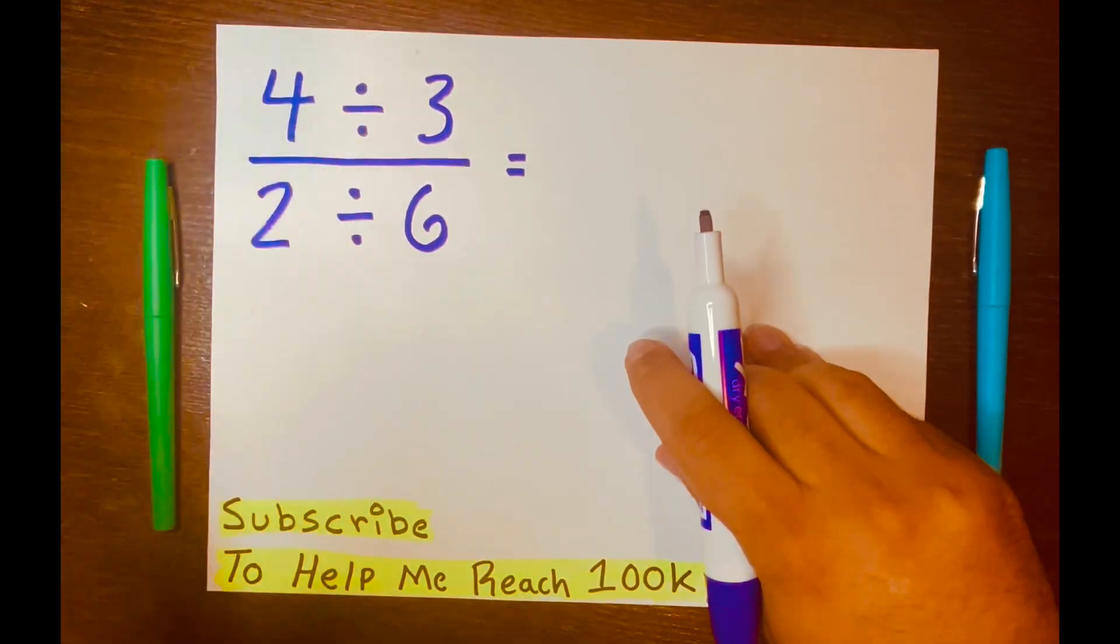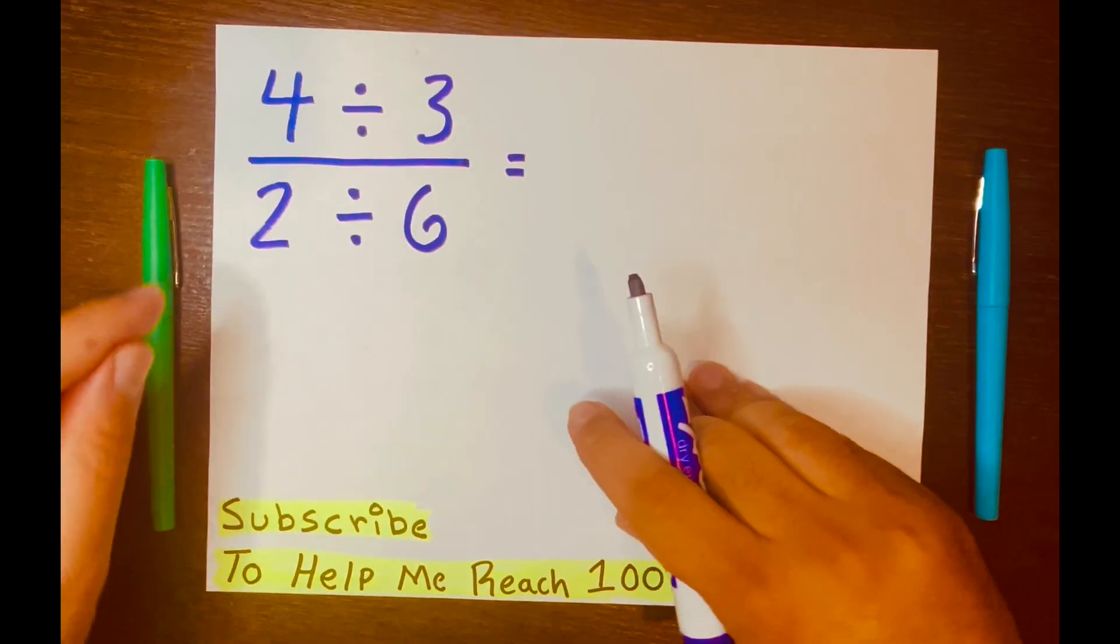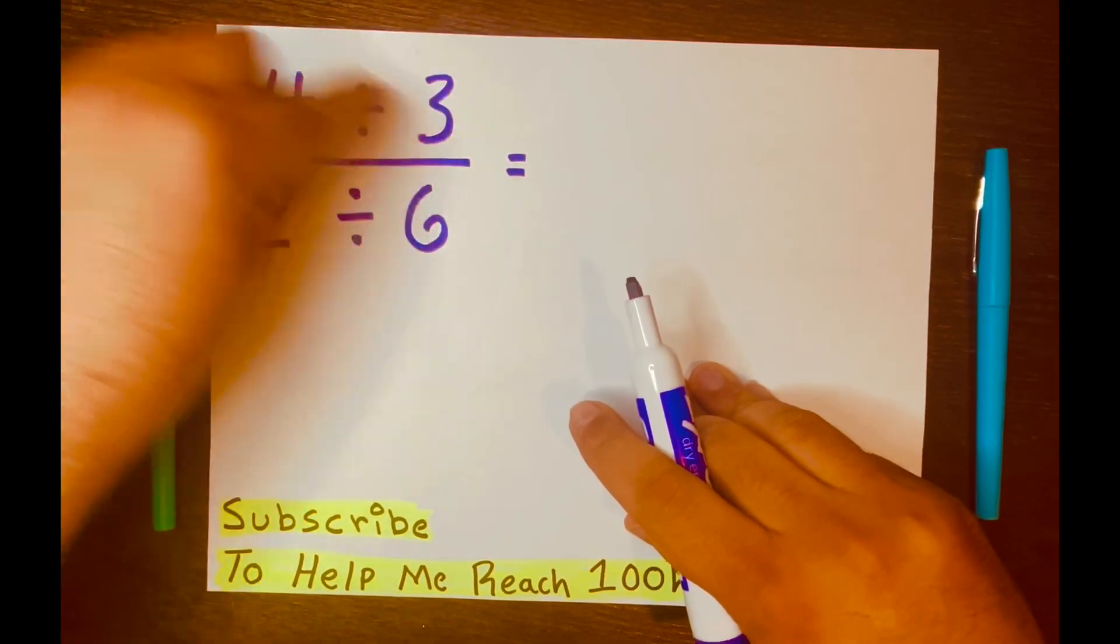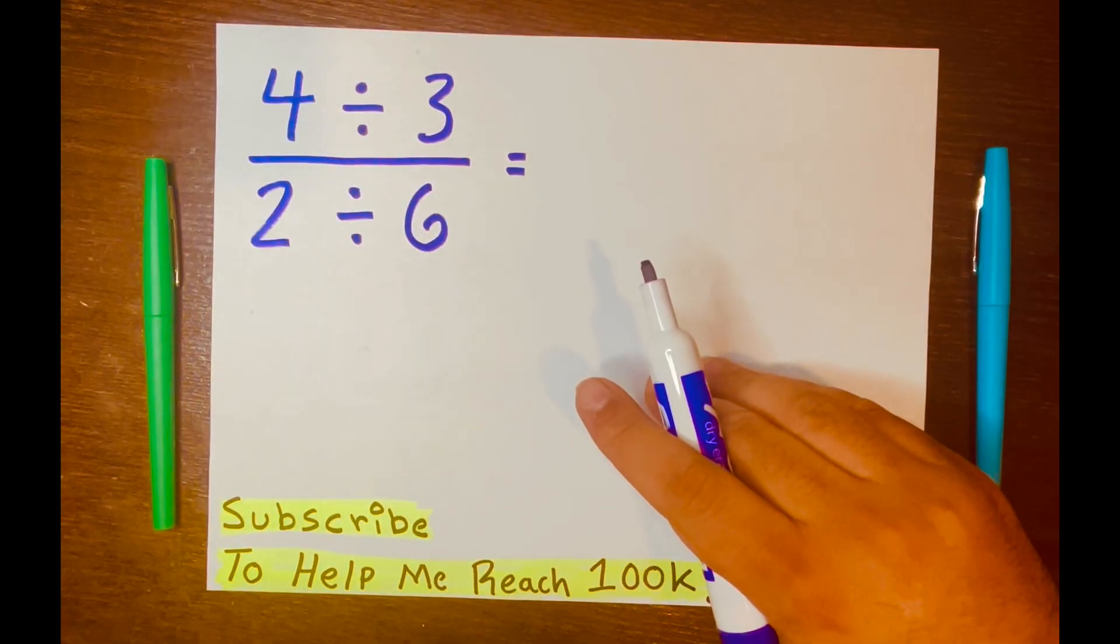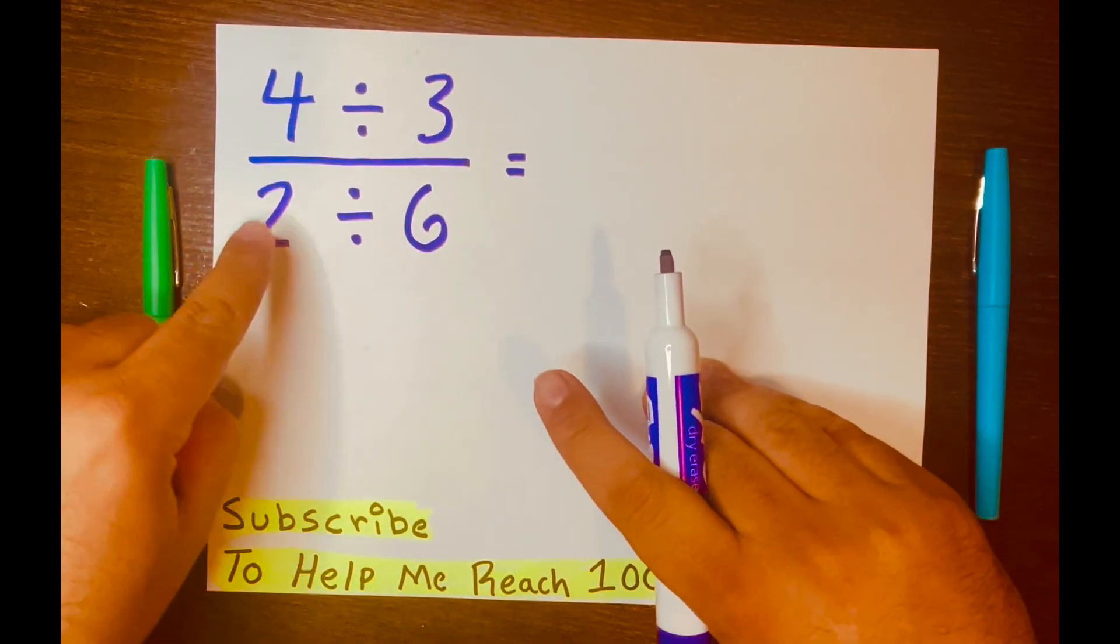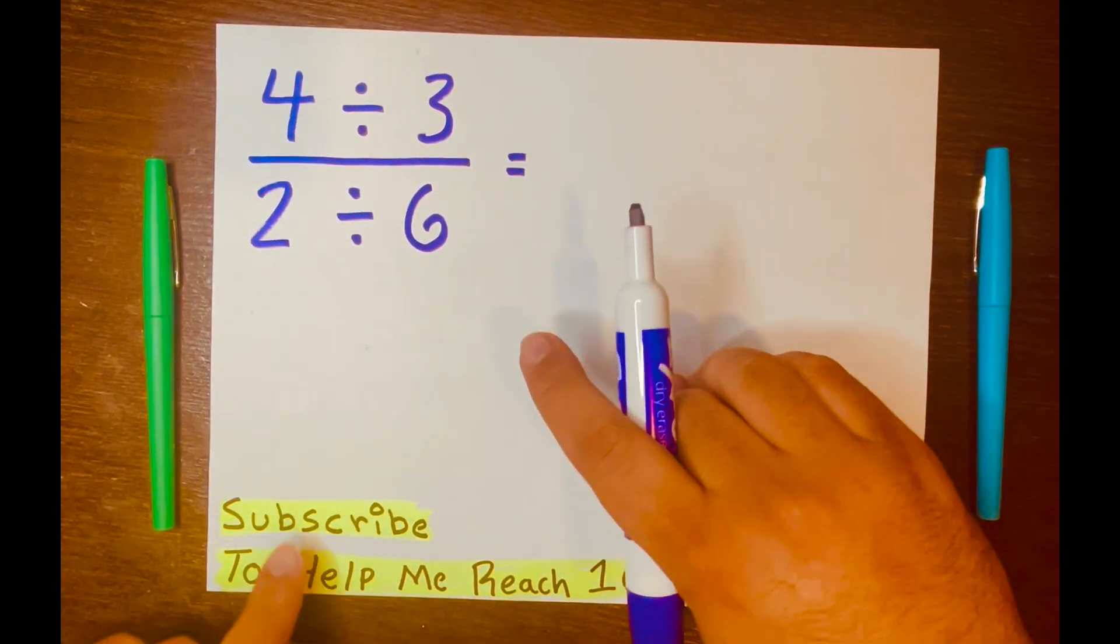When you see a math problem like this, you want to use a method called keep, change, flip, where you're going to keep the top part of the fraction, then change the division bar to multiplication. And lastly, you want to flip the bottom part of the fraction. So let me go ahead and show you that.